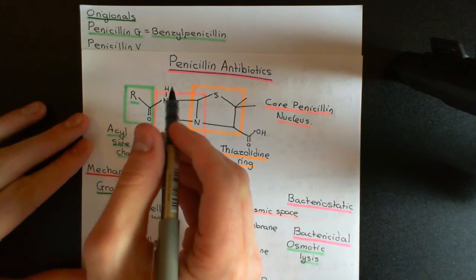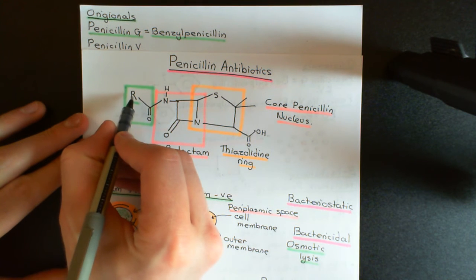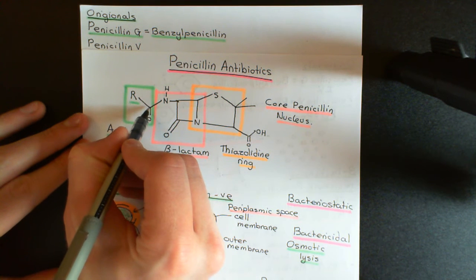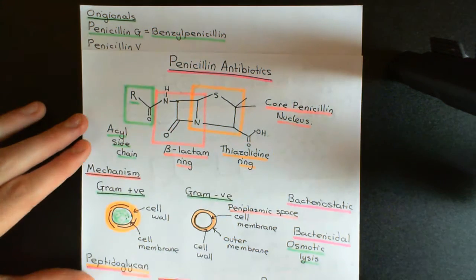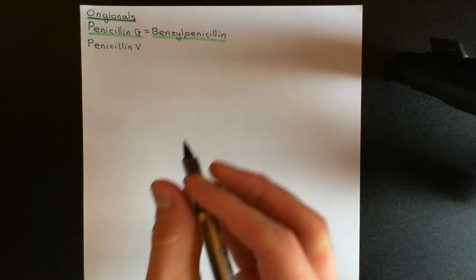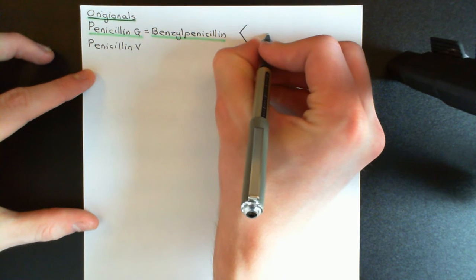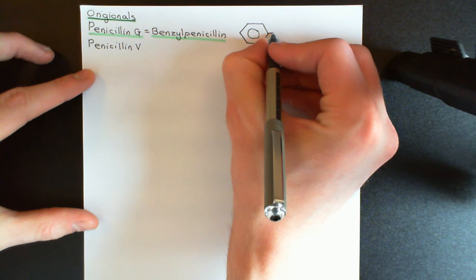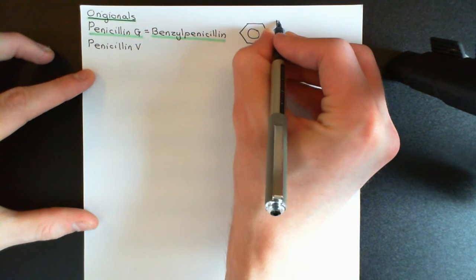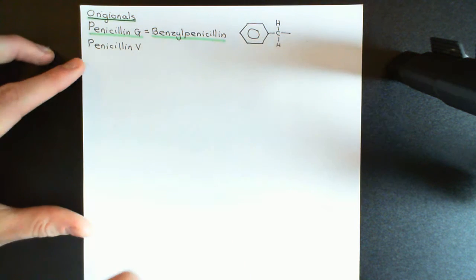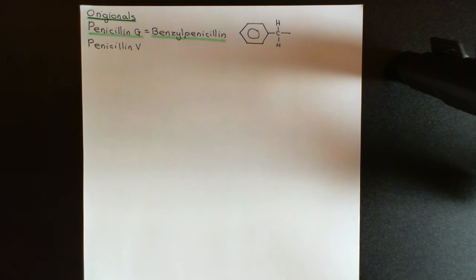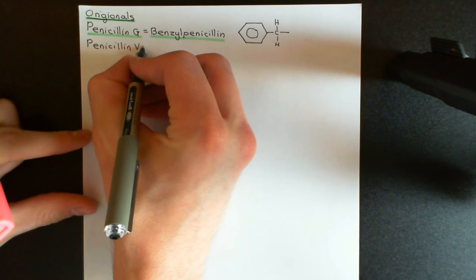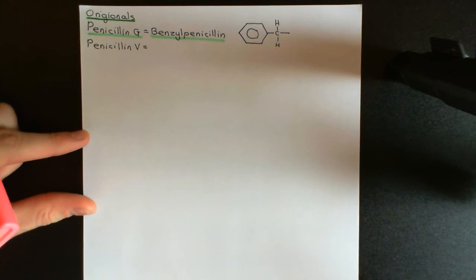Looking at the core penicillin structure, we have an amide link, and the R group will be attached to the carbonyl carbon of that amide link. The R group of Benzylpenicillin consists of a benzene ring — drawn as a hexagon with a circle to represent the delocalised ring of electrons — then a methylene group, and then the free bond which binds to the carbonyl group of the amide link on the core penicillin structure. That is the structure of Benzylpenicillin, also called Penicillin G, one of the original penicillins.